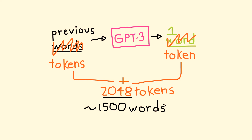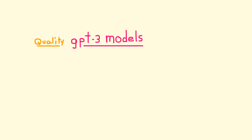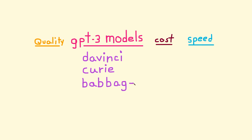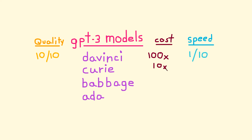Another issue with GPT-3 is its cost and speed. To address these limitations, OpenAI has implemented different models of GPT-3, each a slightly modified version with its own strengths. There are four models: DaVinci, Curie, Babbage, and Ada. DaVinci is the best model — the most expensive and slowest, but it produces the highest quality output. The Curie engine is 10 times cheaper than DaVinci with almost no loss in quality and is slightly faster. Then there's the Ada engine, which is much, much faster and the cheapest of them all.